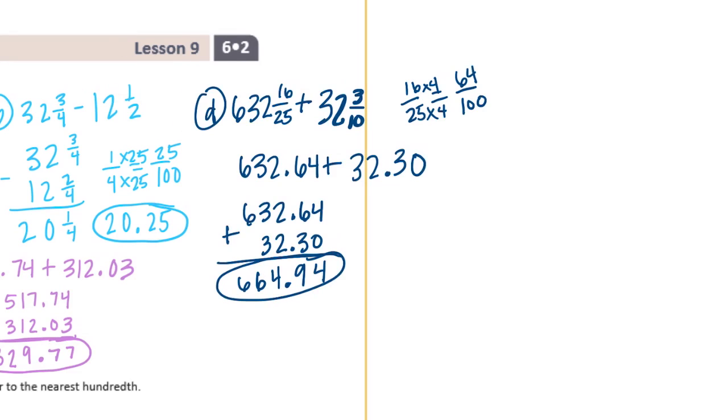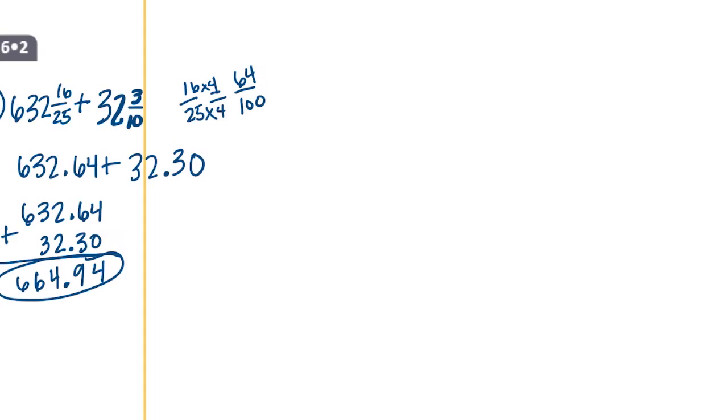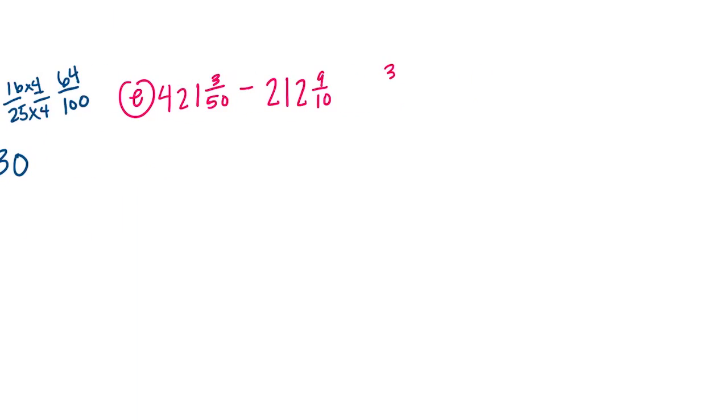And the last one, E. I'm just going to write the problem over here. So the problem is 421 and 3 fiftieths minus 212 and 9 tenths. So 3 fiftieths I'm going to make into hundredths. Times 2 times 2 would be 6 hundredths. So we have 421 and 6 hundredths minus 212 and 9 tenths. I'll make it 90 hundredths. So let's subtract.